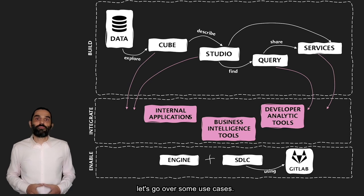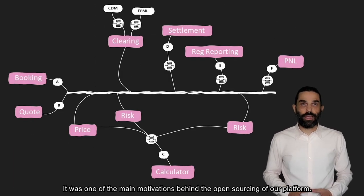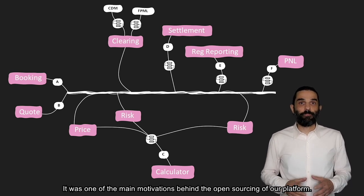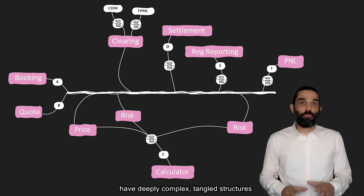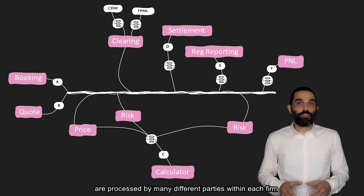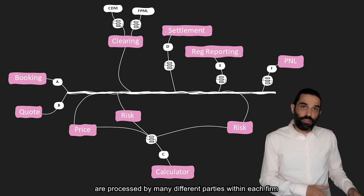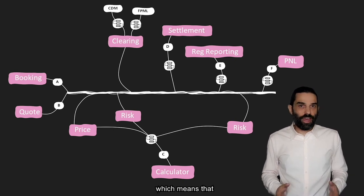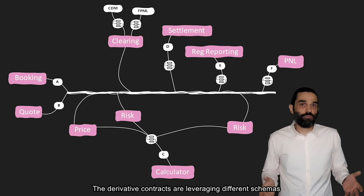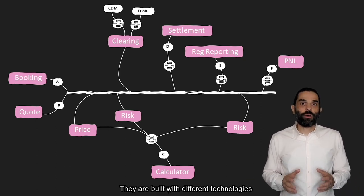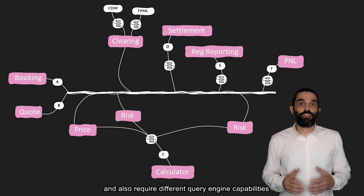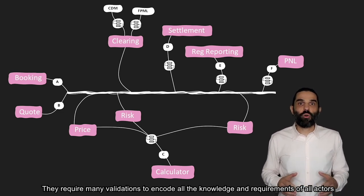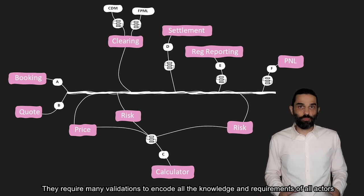Now that you're familiar with Legend and its components, let's go over some use cases. Let's start with the derivatives use case. It was one of the main motivations behind the open sourcing of our platform. The derivative flow is complex because derivative contracts evolve frequently, have deeply complex tangled structures, are processed by many different parties within each firm and also outside each firm, which means that derivative contracts are leveraging different schemas and thus require transformations. They are built with different technologies as many of these processing steps were built at different times and also require different query engine capabilities. They require many validations to encode all the knowledge and requirements of all actors.